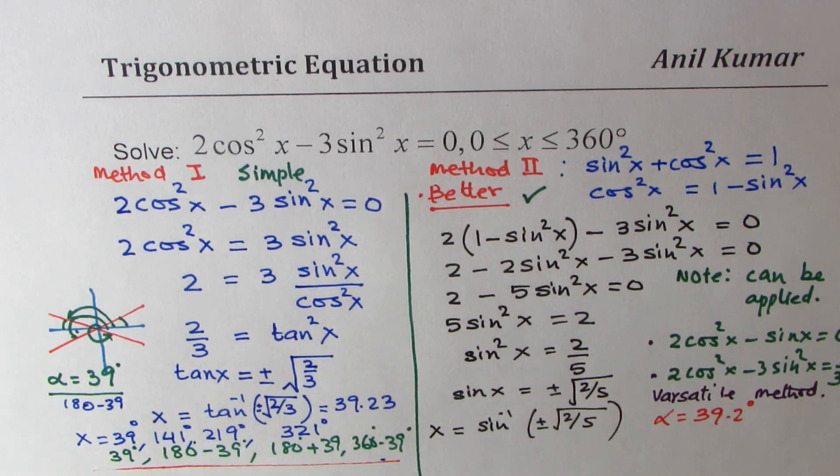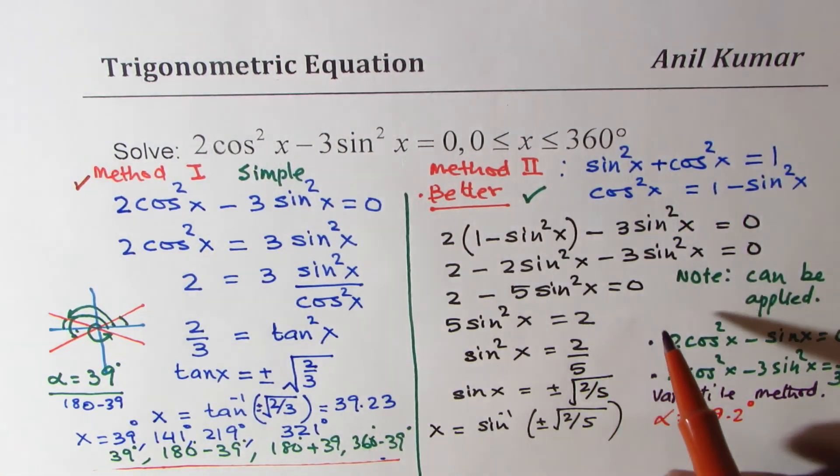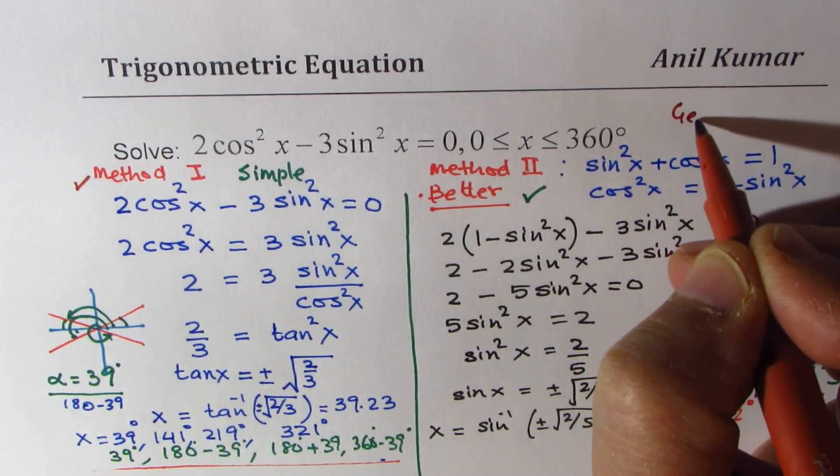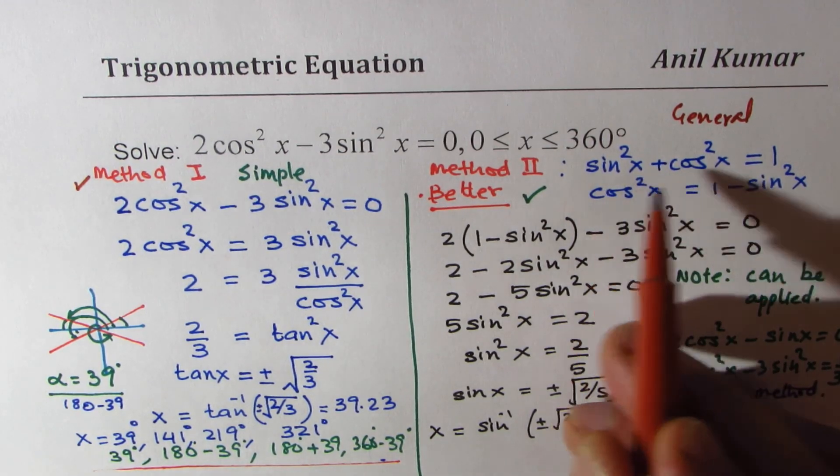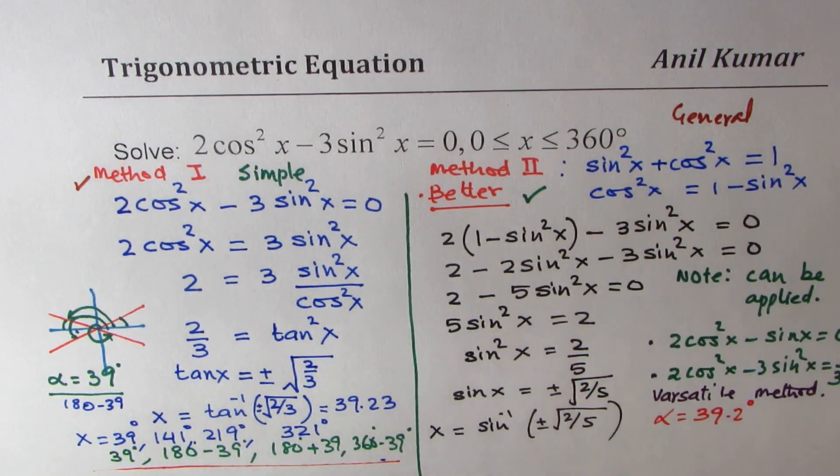For this particular question, it is better to use method 1. However, the general method is to convert sine or cosine in one variable and then solve like a quadratic equation.